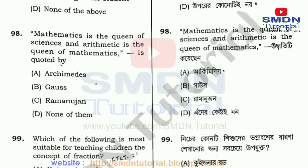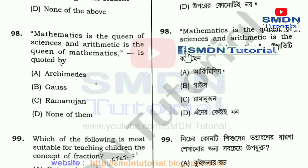Mathematics is the queen of science, and arithmetic is the queen of mathematics. Udrititi koree chan gauz. Gauz cheta roe chai option b.